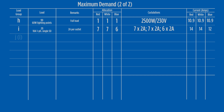Load group J1 is applied to the communal clothes dryers. There are 10 of these units, and the highest loaded phase will have four of them. The loading applied here is 50% of connected load. The calculation gives 31.3 amps on the highest loaded phase.